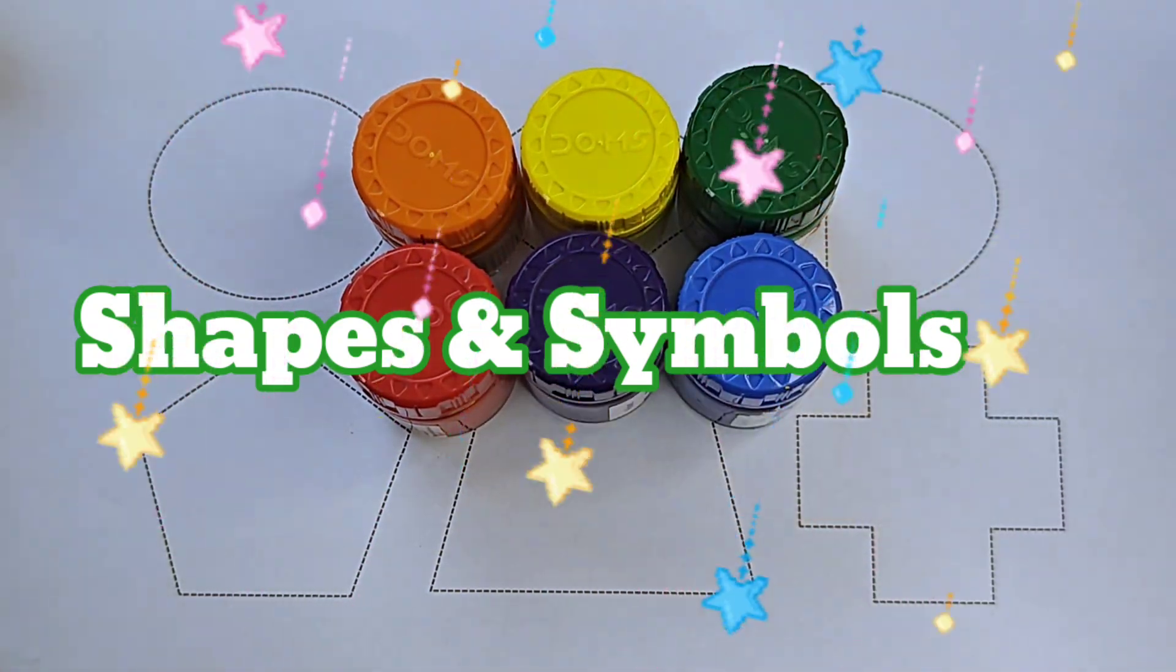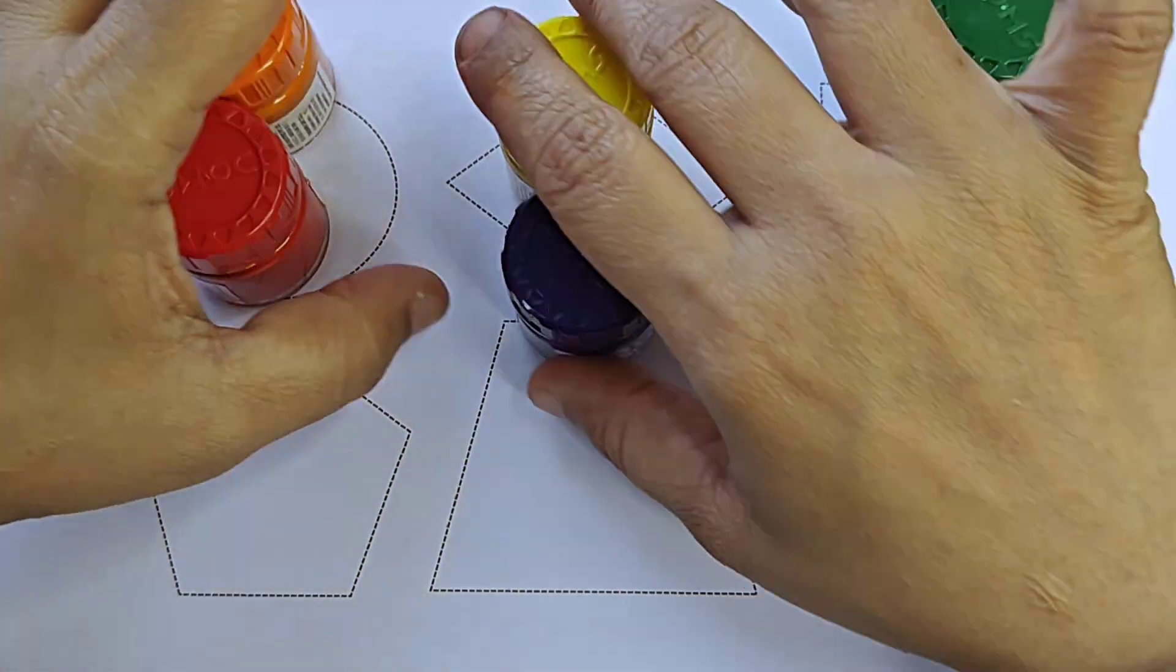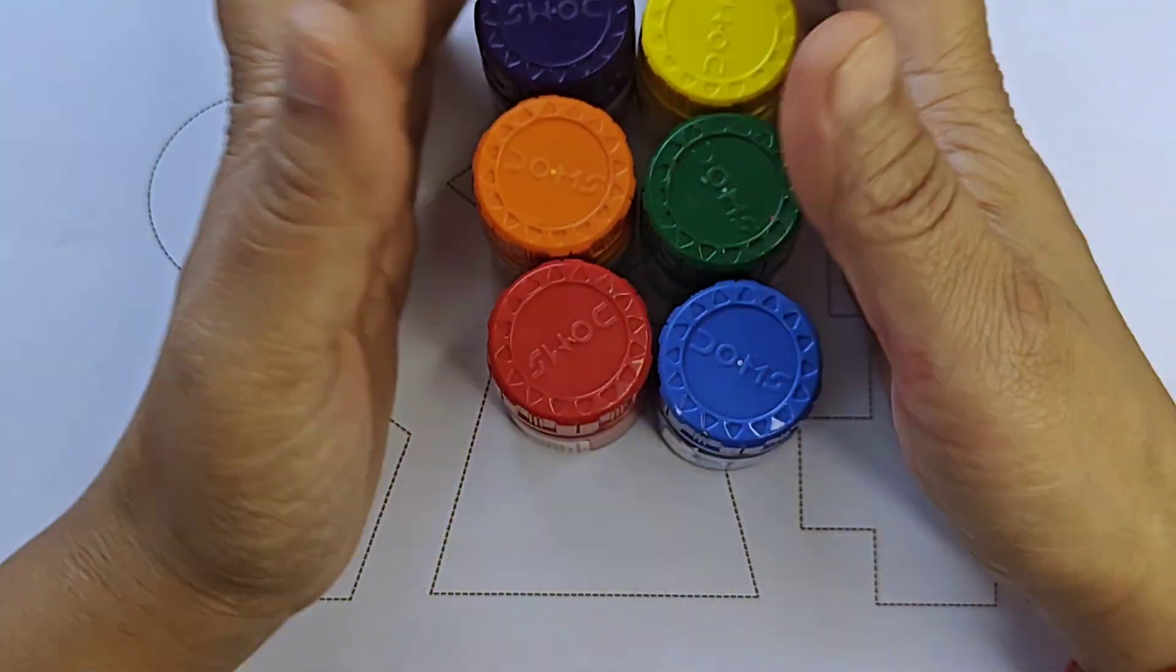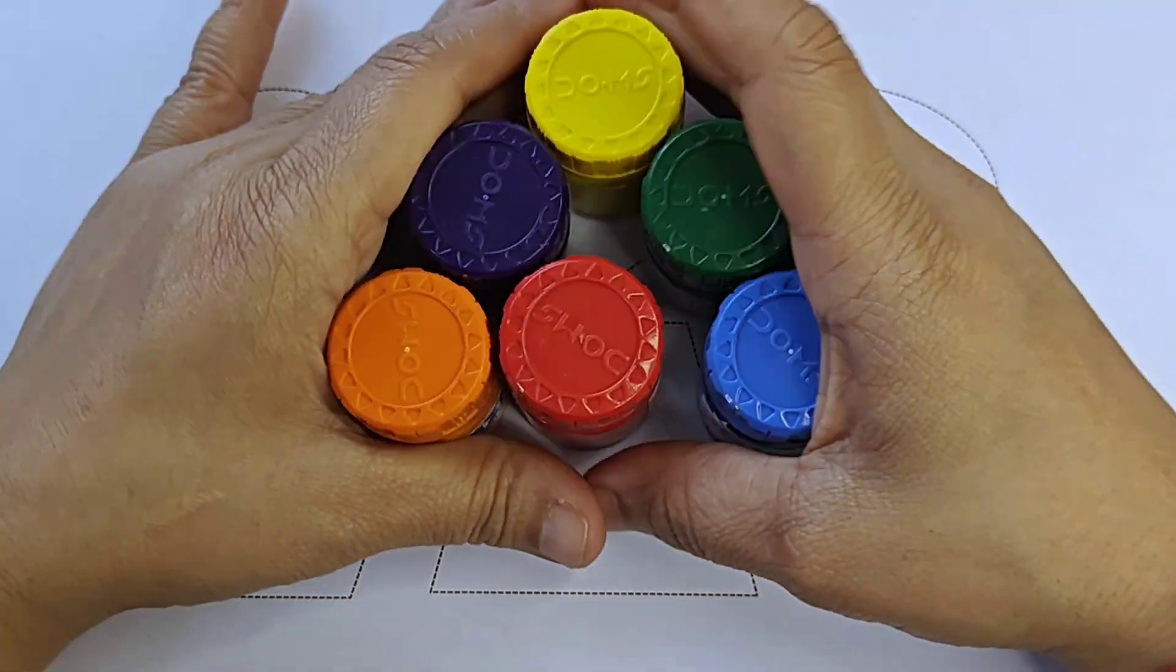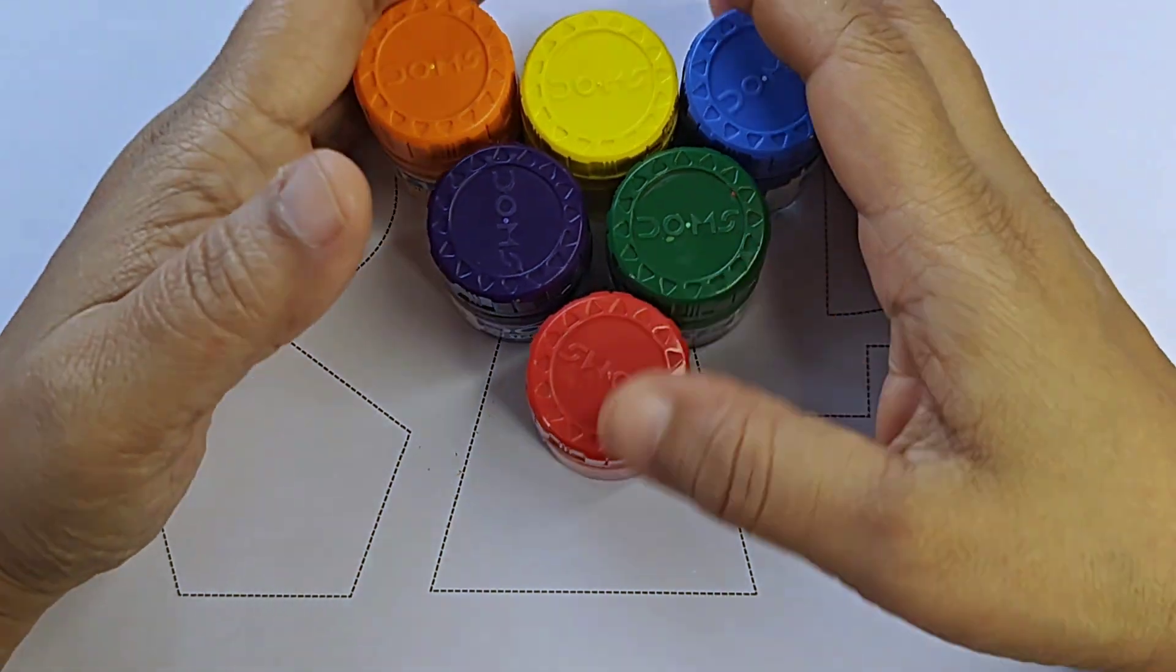Hello, hello kids. In this video, we will learn some new shapes. These are our shapes and know about the color name. These are our shapes and these are our colors.